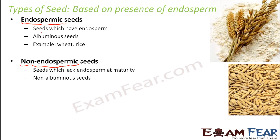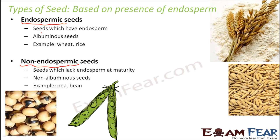Non-endospermic seeds are those which do not have any endosperm left at maturity, and they are also called non-albuminous seeds. Examples include pea and groundnut, where you just have the seed and there is no endosperm with it.